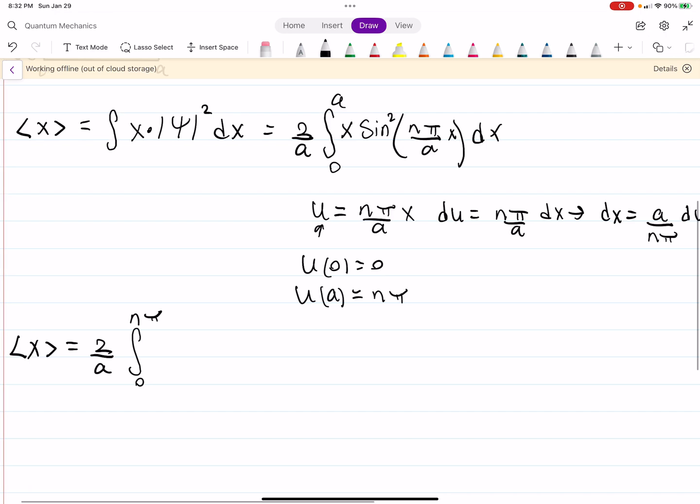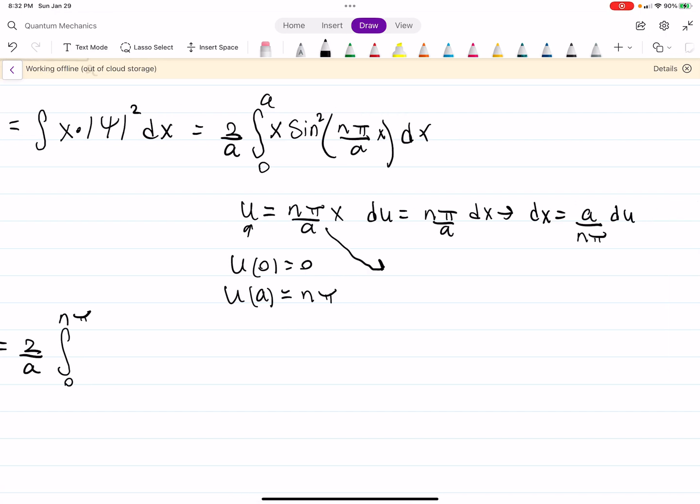So, we can just rewrite this. Oh, yes, we also should probably mention that x is equal to a over n pi times u. The integral from 0 to n pi. And then, what do we have? U sine of u du. I mean, I guess these cancel. That's something, right? And then, I guess you could integrate by parts here. Or you could plug it into a computer.